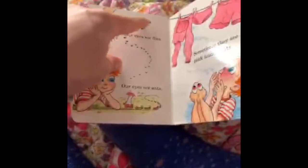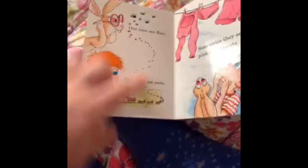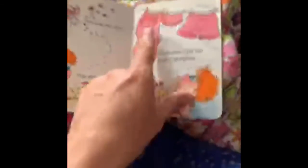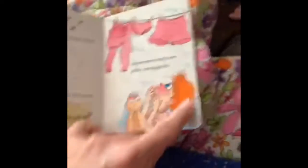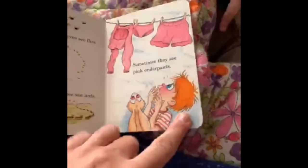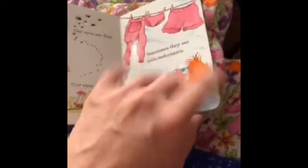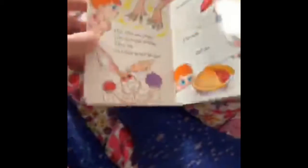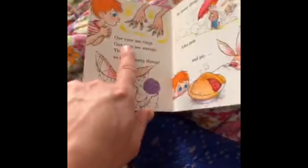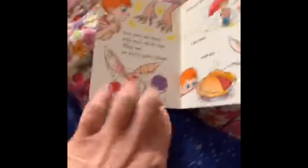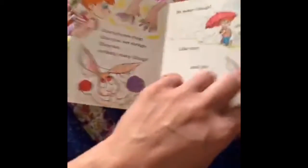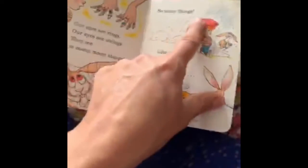Our eyes see flies. Our eyes see ants. Sometimes they see pink underpants. What? Let's make it in blush. Pink blush. Our eyes see rings. Our eyes see strings. They see many, many, many things.